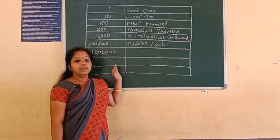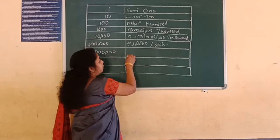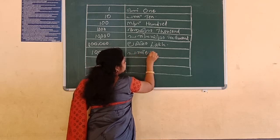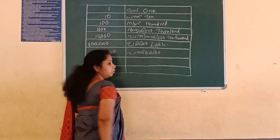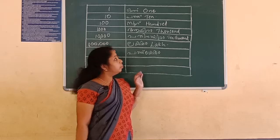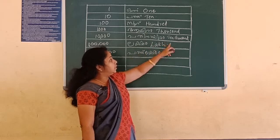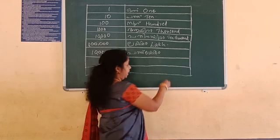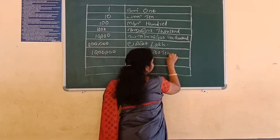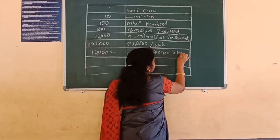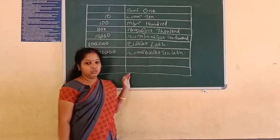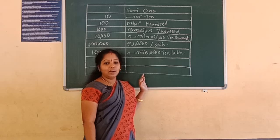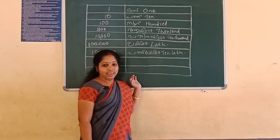This is the smallest seven digit number. What is the smallest seven digit number? Okay, now in English language. Thousand, ten thousand, lakh, ten lakh. Very good, ten lakh. Yes, very good, super. Ten lakh.